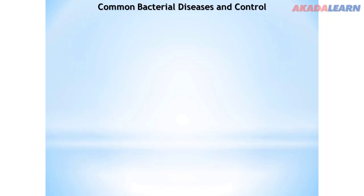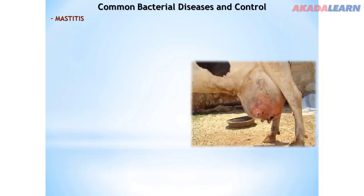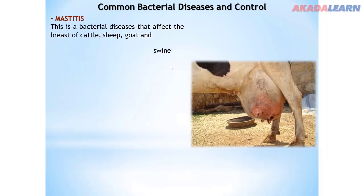Now, common bacterial diseases and their control. We shall look at common bacterial diseases, their possible control, symptoms, and possible effects on farm animals. Number one, we have mastitis. This is mostly a disease that affects the animal's udder — also known as the animal's breast. It causes enlargement of the udder.